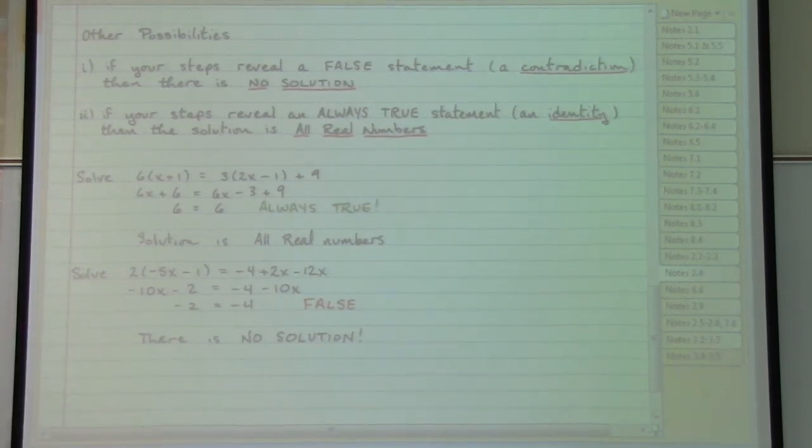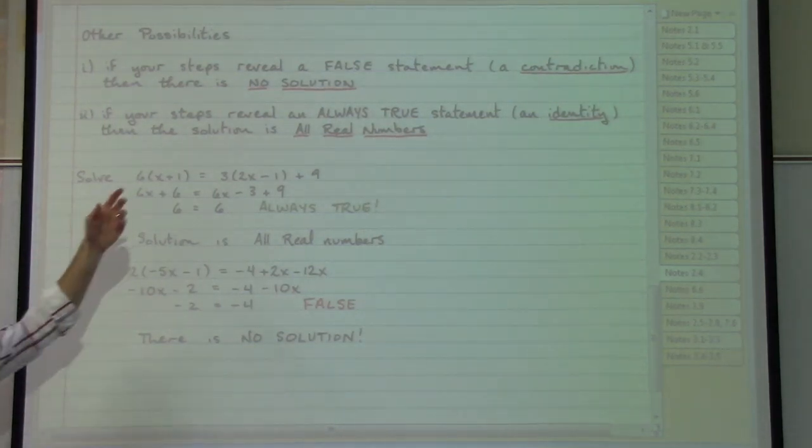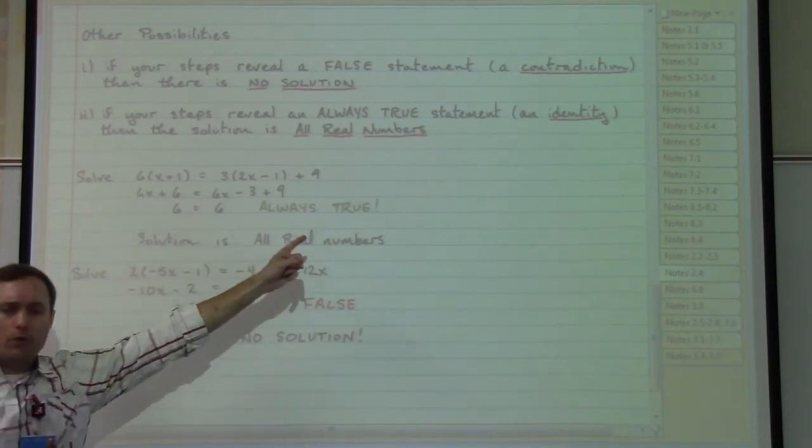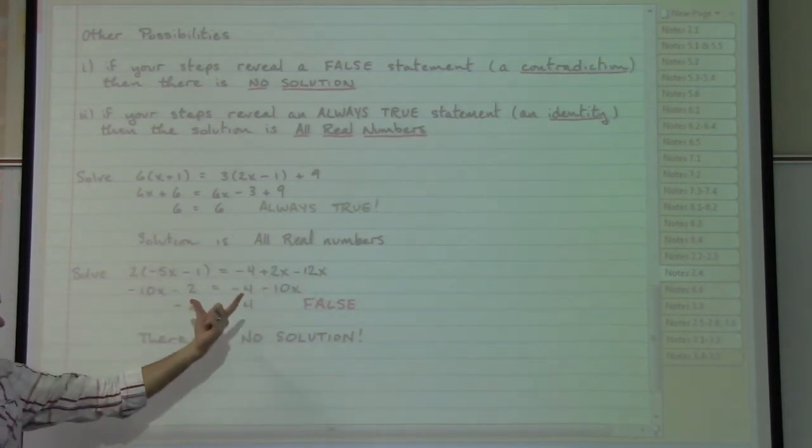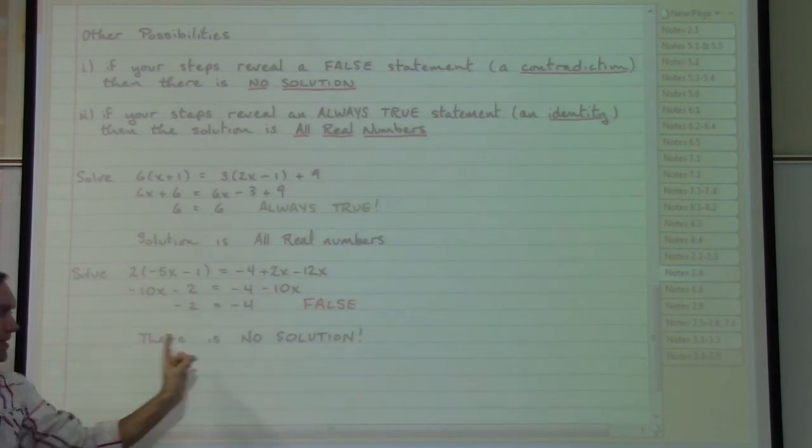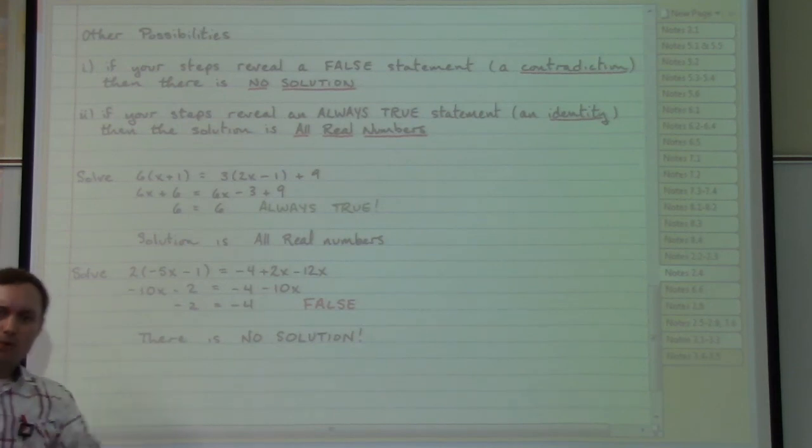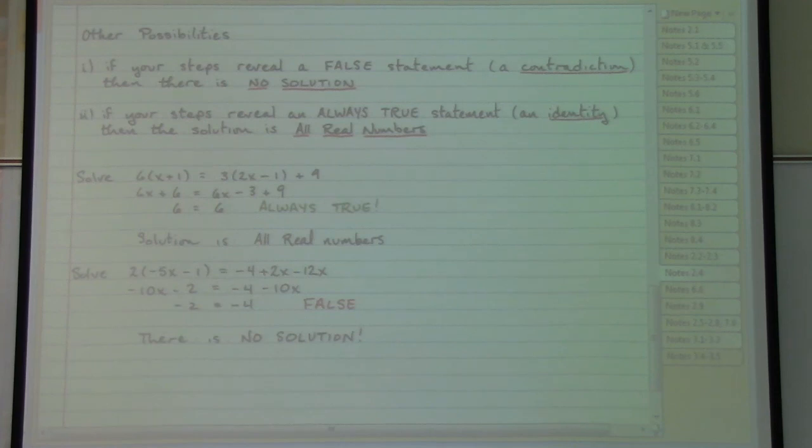Which means that, again, when we see an equation and we are told to solve, we begin by using the steps that were mentioned earlier in the notes and we simply see how things work out. If our variable stuff happens to disappear, it will leave us with one of two possible statements: a statement that is always true, so we say our solution is all real numbers, or it will leave us with a statement that is false, so we say that there is no solution. If our variable stuff continues to remain in the problem as we work our steps out, then what we will have is, for now, one solution.